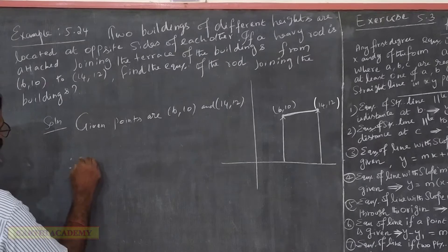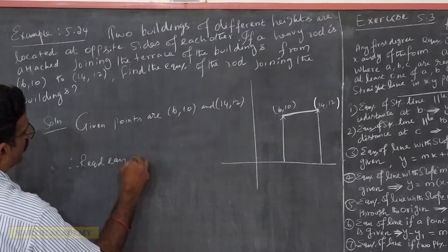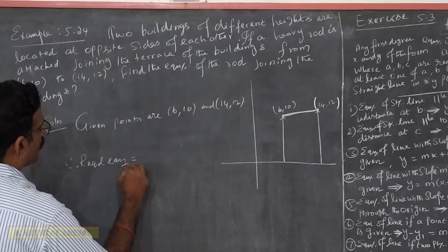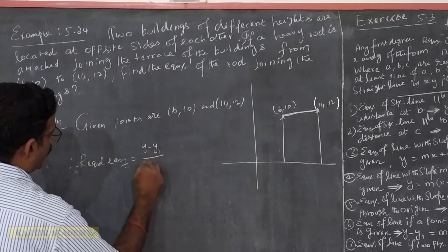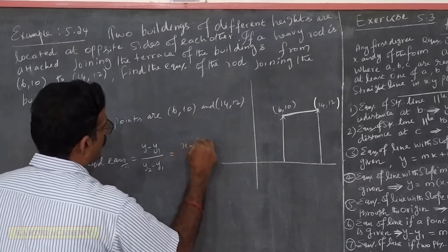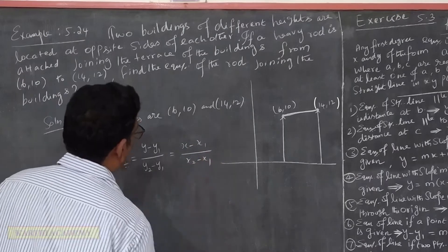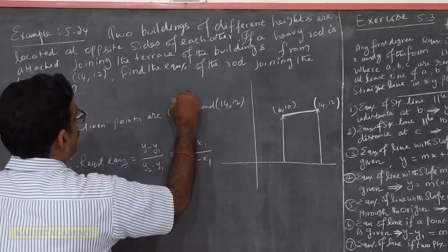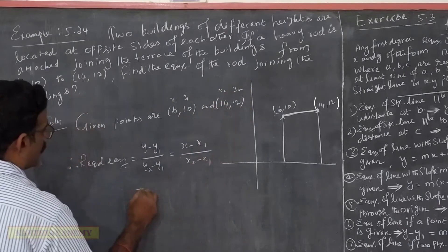Therefore, the required equation is: y minus y1 divided by y2 minus y1 equals x minus x1 divided by x2 minus x1. So this is x1, y1, x2, y2.